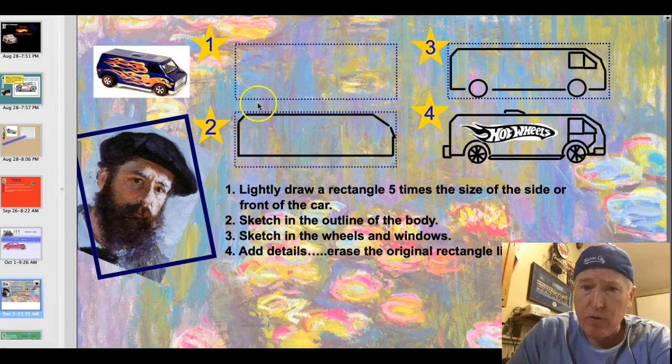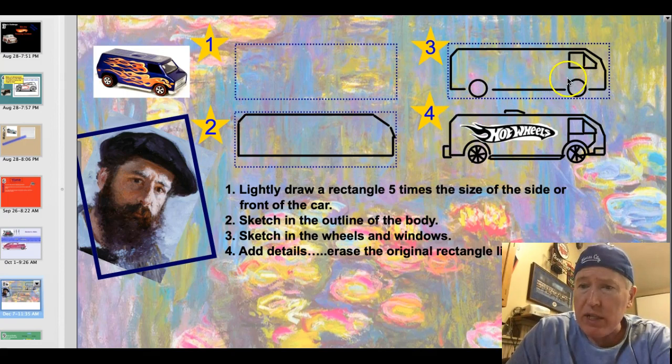I'm doing this van over here. And then sketch in the outline of the body. I kind of roughed that out a little bit. And then sketch in the wheels and the windows. Put those on. Get those looking proportional. And finally, add in the details and erase that original rectangle.